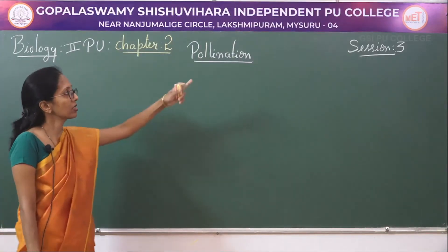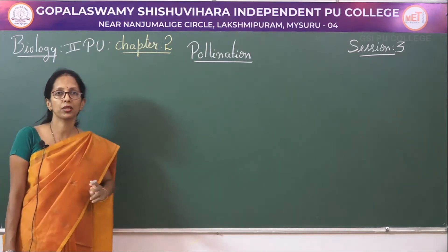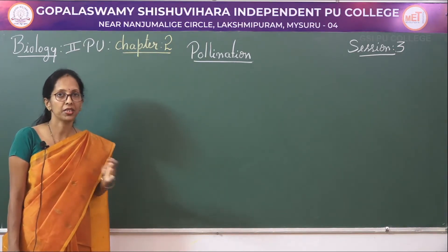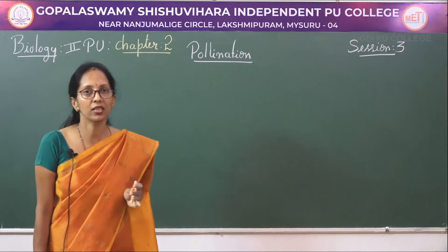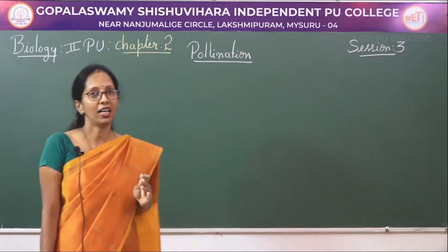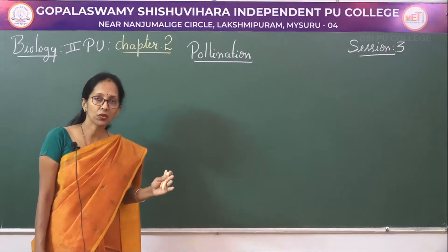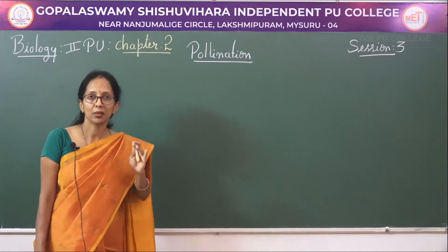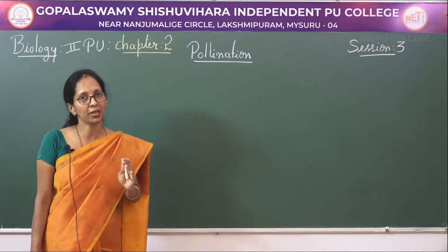Hello everyone, welcome to session number 3 of chapter number 2, that is Sexual Reproduction in Flowering Plants. In the previous sessions we understood androecium and gynoecium, which are said to be essential whorls. In androecium we understood microsporogenesis, and in gynoecium we understood megasporogenesis. The microspore finally organizes into a pollen grain, and the megaspore finally organizes into an embryo sac or female gametophyte.